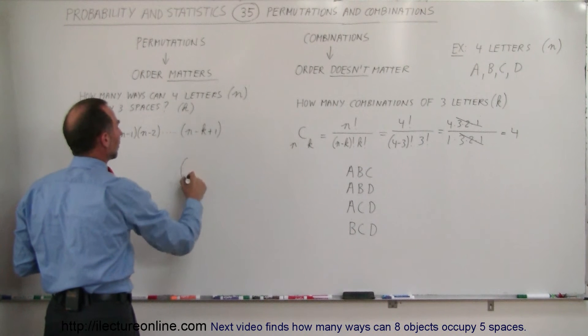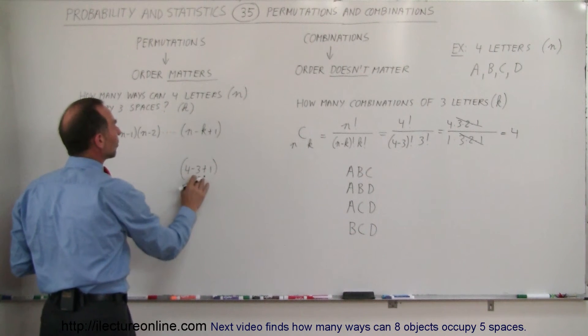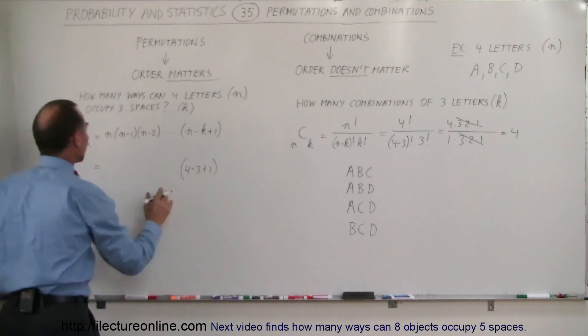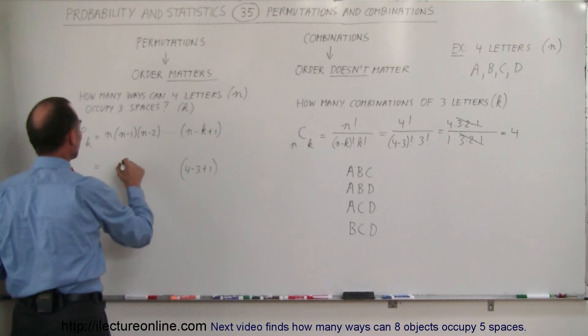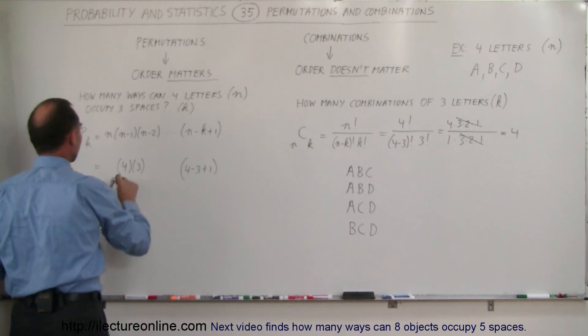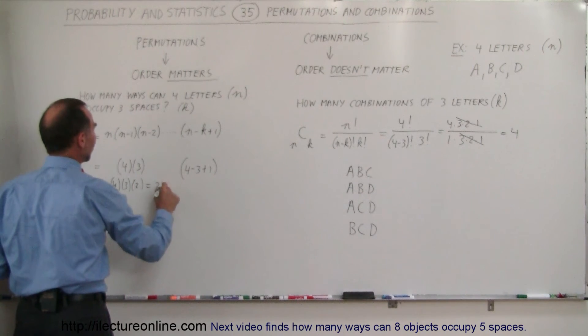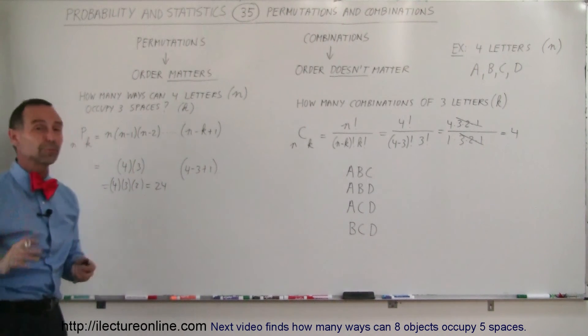So 4 minus 3, I'll just go ahead and write it down, that would be 4 minus 3 plus 1. So, 4 minus 3 is 1 plus 1 is 2, which means this would be 4 times 3 times 2, which is equal to 24. There's 24 different permutations.